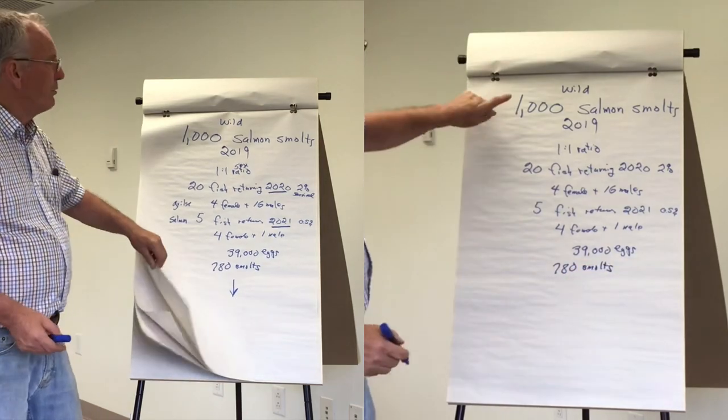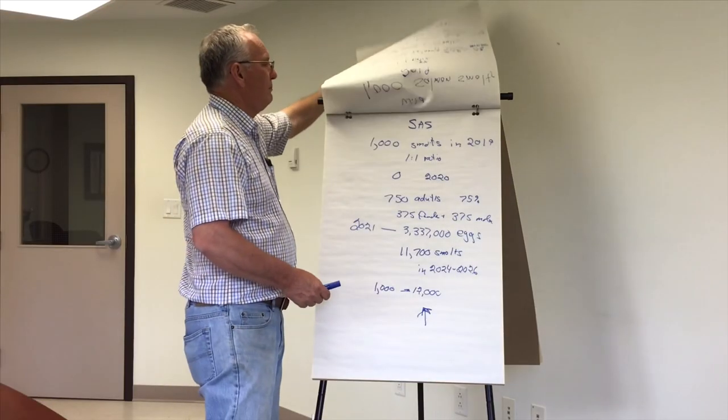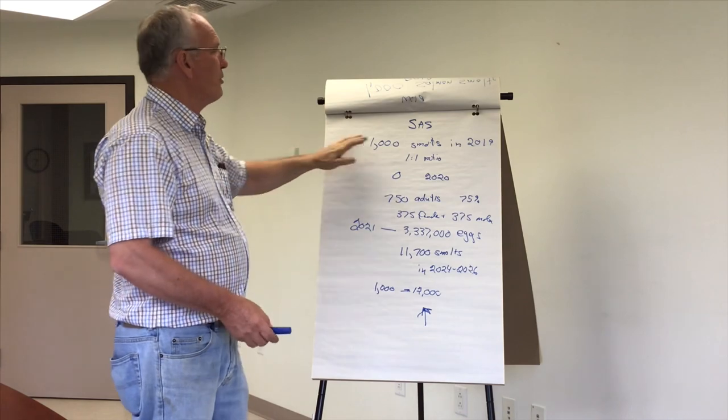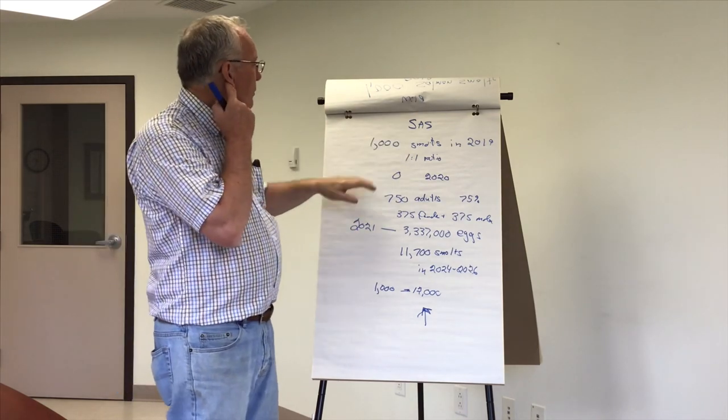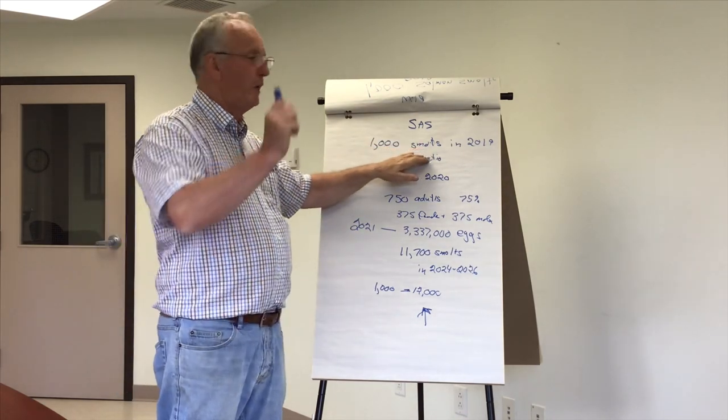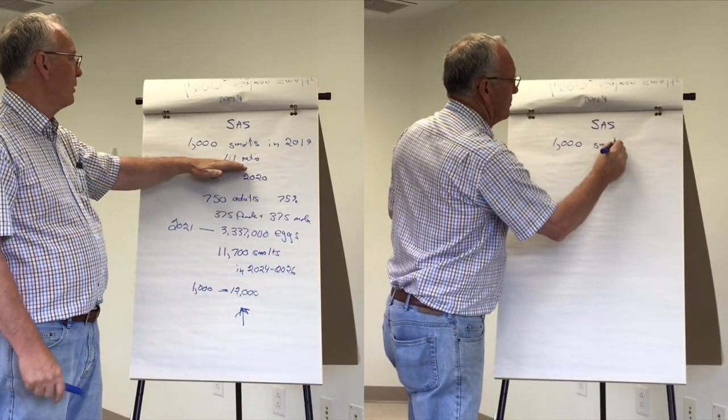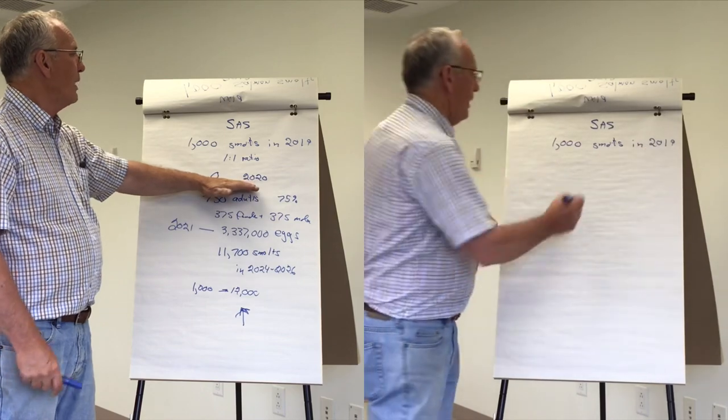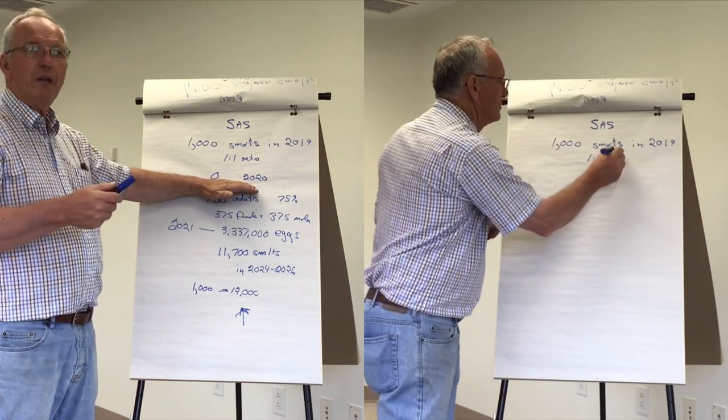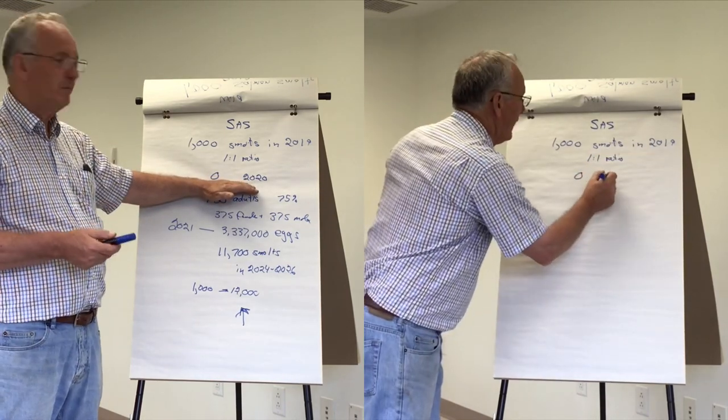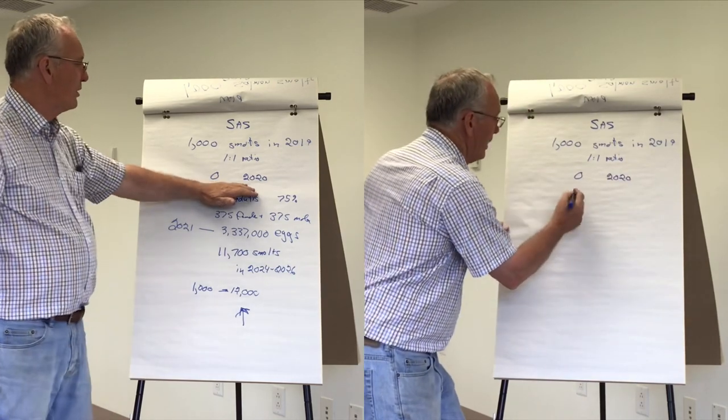But what if we intervene and use the SAS program, where we're going to capture those 1,000 smolts in 2019? Again, they're half male, half female, one-to-one ratio. We're not going to put any out in 2020 as grills, so there's zero coming back that year.